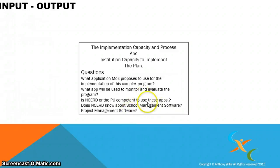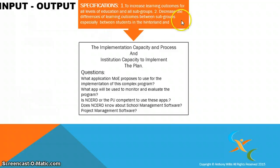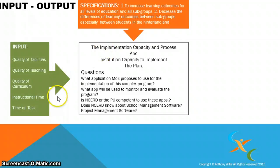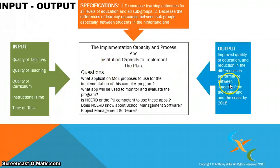The input-output framework specifies increasing learning outcomes across all levels of education and all subgroups, and decreasing differences in learning outcomes between subgroups — especially between students in the hinterland and the coast. A certain amount of input resources are required: quality of facilities, quality of teaching, quality of curriculum, instructional time, and time on task. This is what is inputted into the current system to achieve the desired output. That is the general input-output framework.